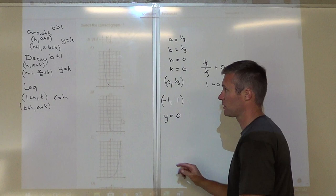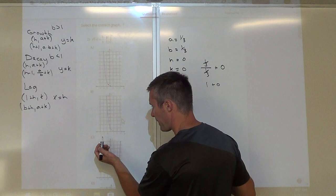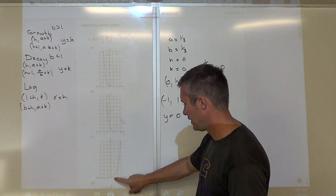You can check the other options and see if they work. Checking (negative 1, 1) — not there, not there. So for number two, my answer is A.